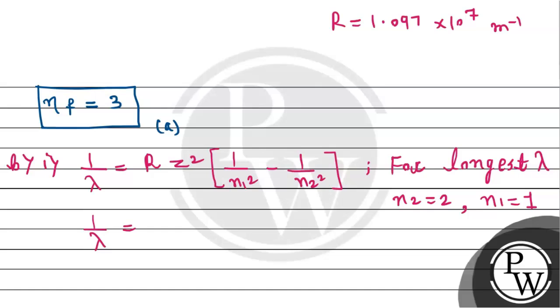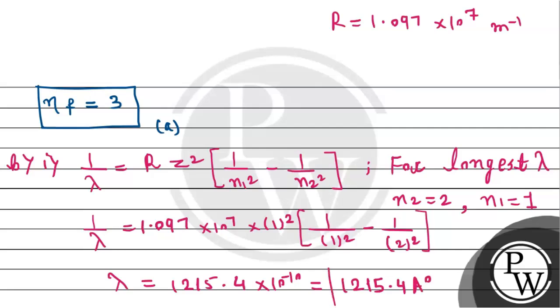Substituting these values, we get 1.097 into 10 to the power 7 multiplied by 1 squared into the bracket 1 divided by 1 squared minus 1 by 2 squared. This becomes 1 minus 1/4, which is 3/4. When we take reciprocal, we will get the required wavelength lambda equals 1215.4 into 10 to the power minus 10. 10 to the power minus 10 means angstrom. So the longest wavelength is 1215.4 angstrom. This is the answer for B sub-part 1.